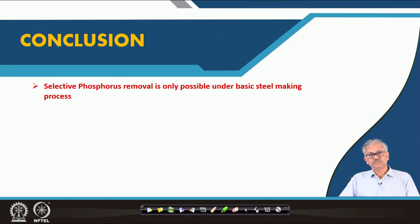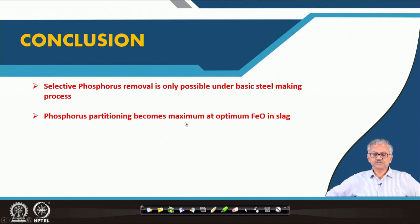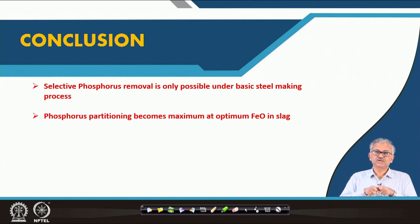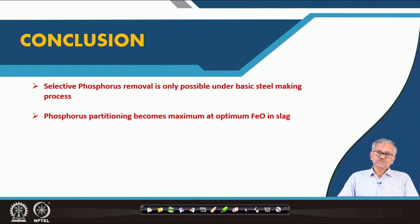In conclusion: selective phosphorus removal is only possible under basic steelmaking conditions. Carbon, manganese, and silicon can be removed even under acid steelmaking conditions, although basic slag favors silicon removal. For phosphorus removal, a basic slag is mandatory. Phosphorus partitioning is maximum at an optimum FeO — around 15% — because both FeO and CaO favor phosphorus removal: FeO acts as an oxidizing agent and CaO acts as the basic agent. But increasing FeO too much dilutes the slag basicity.